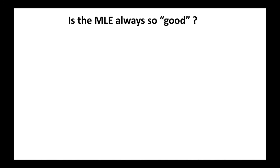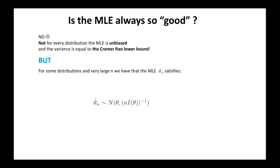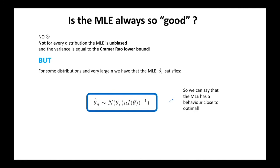We can wonder if it is a coincidence or if it is always like this. We cannot say that for every distribution the maximum likelihood estimator behaves so well, but there is an interesting result that tells us that for some distributions belonging to the exponential families, the maximum likelihood estimator behaves asymptotically well. That is, for large n, the distribution of the maximum likelihood estimator can be approximated by a normal with mean theta and variance equal to the Cramér-Rao lower bound. So the maximum likelihood estimator has a behavior close to the optimal one. This explains why it is a very important estimator.